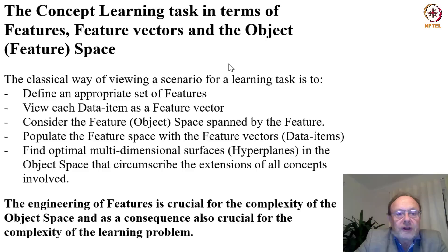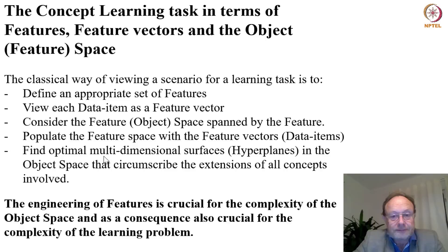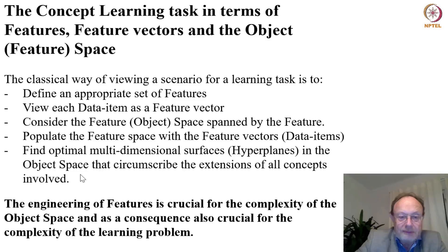The classical way of viewing a scenario for a learning task is to define an appropriate set of features, view each data item as a feature vector, consider the feature or object space spanned by the features, populate the feature space with the feature vectors or data items, find optimal multi-dimensional surfaces — hyperplanes in the object space that circumscribe the extensions of all the concepts involved. The engineering of features is crucial for the complexity of the object space and as a consequence also crucial for the complexity of the learning problem.